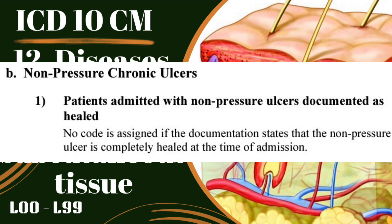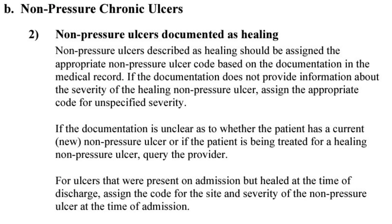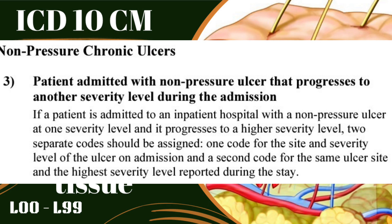Next is the non-pressure chronic ulcer guideline. If a patient is admitted with a non-pressure ulcer documented as healed, do not code the non-pressure ulcer. If documented as healing, still code it. If a patient admitted with a non-pressure ulcer progresses to another severity level during the admission, code two separate codes — one for the non-pressure ulcer at admission and one for the progressed severity level.